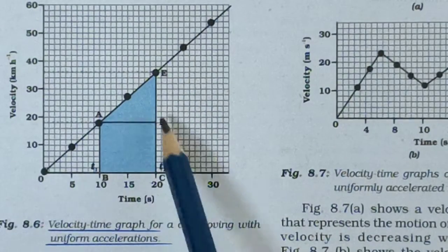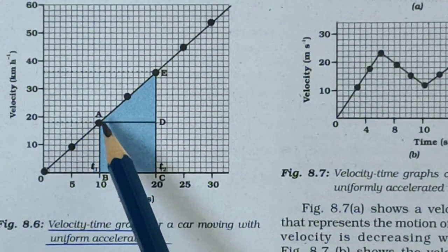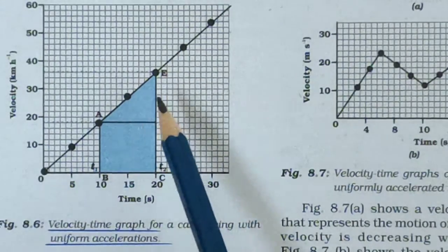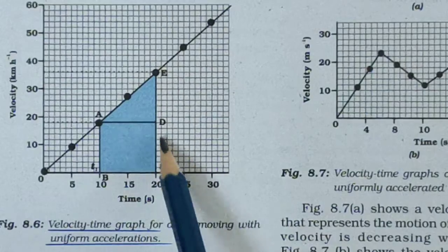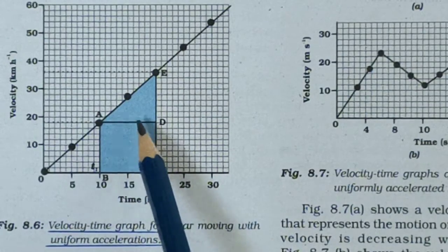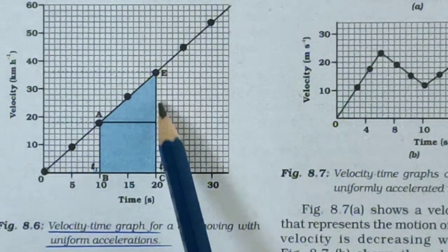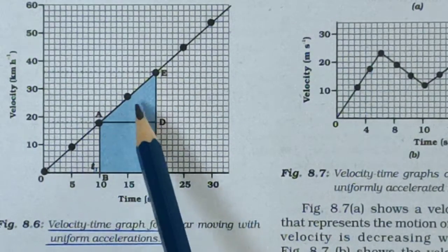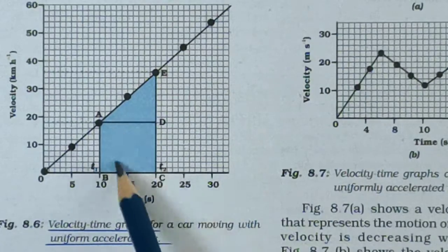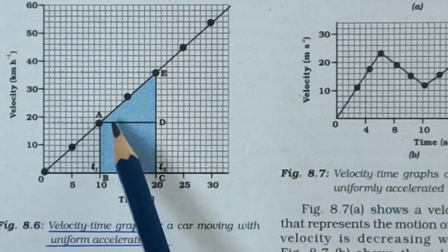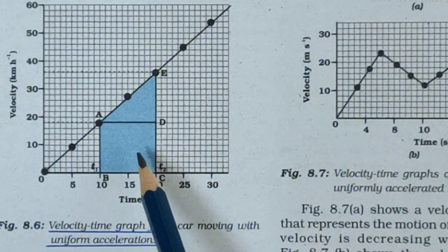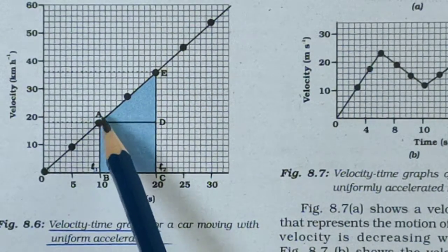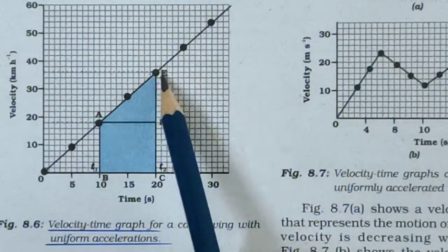The area under the graph from A to E gives the distance travelled from A to E. That means the area consists of the area of a rectangle and the area of a triangle. Finding the area of this figure gives the distance travelled between A and E.